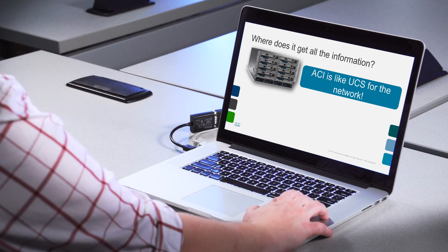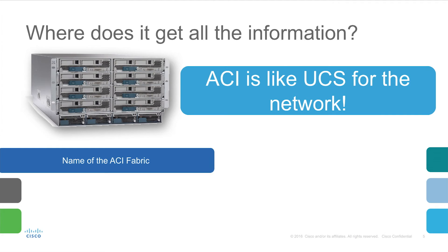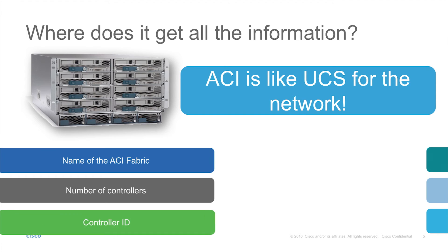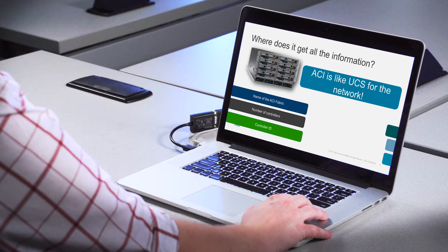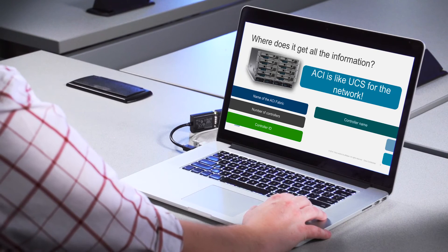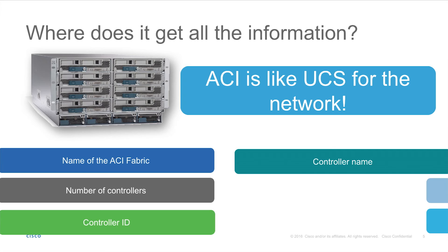The prompts are: first, enter the name of the ACI fabric — this could be arbitrary, but something that makes sense for your organization. Next, enter the number of controllers, which is either going to be three or five, as that's what's acceptable for supported production environments right now. We also enter the controller ID — so if this is the first APIC we're setting up, the controller ID will be one; if it's a second, the controller ID will be two, and so on. We also enter the controller name, which again is arbitrary but will probably be descriptive in your environment.